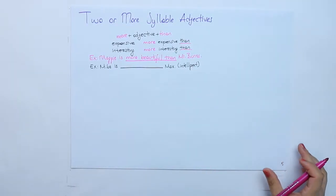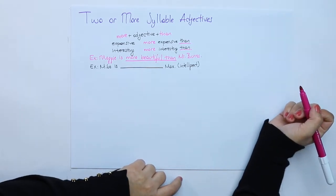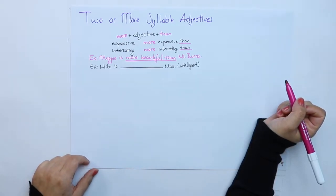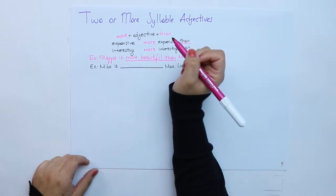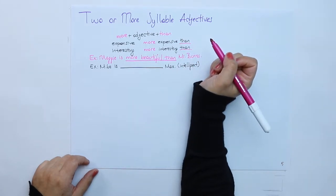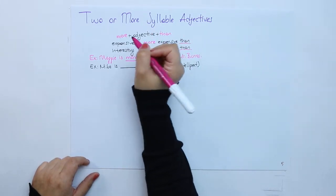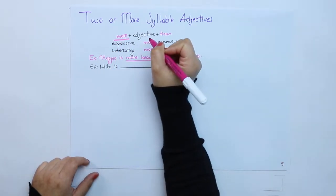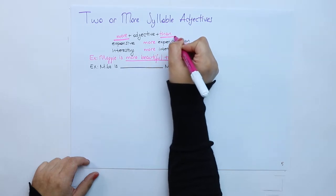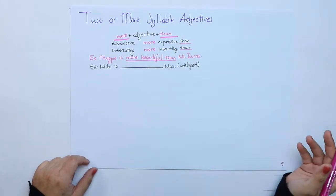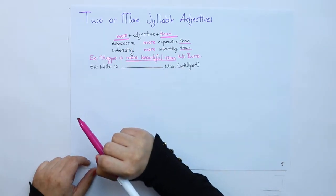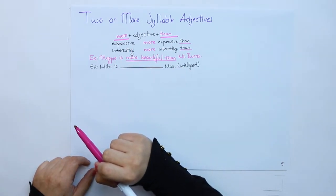Two or more syllable adjectives. If my adjective has got two or more syllables, I don't put ER but I put MORE before my adjective, then add THAN again and finish my sentence. Expensive has got three syllables.